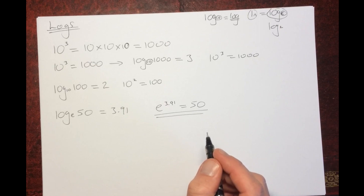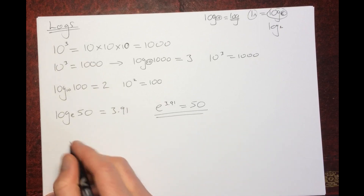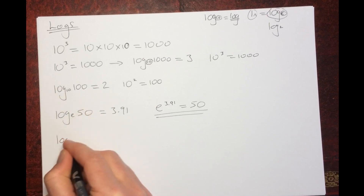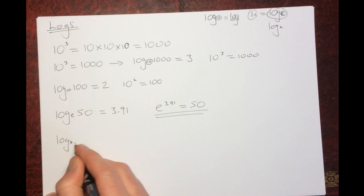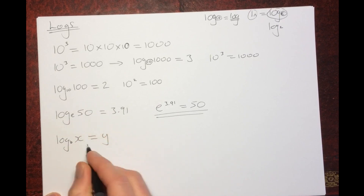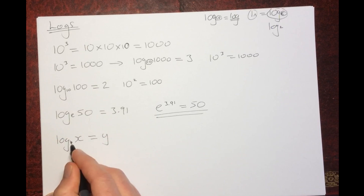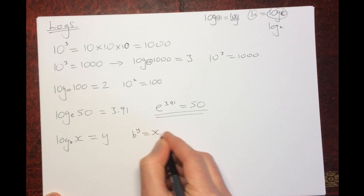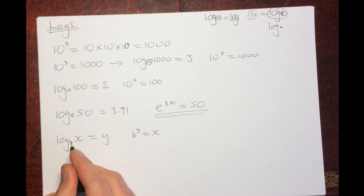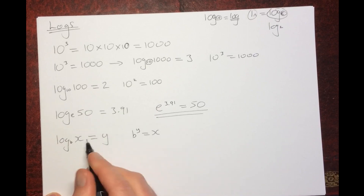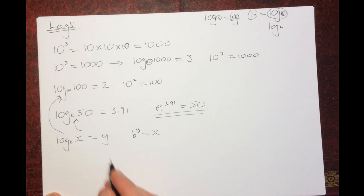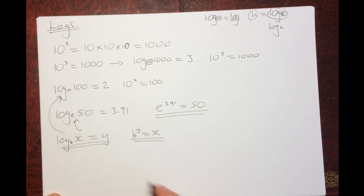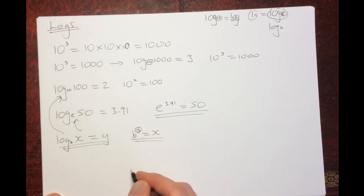Let's look at a general example. If we have log to the base b of x, remember logs can be to any base. What this means is: what power do I have to raise b to in order to get x? The answer is y — that is, b to the power of y equals x. This is the general format, the same as what we've done before. Logs allow us to work out an unknown power.